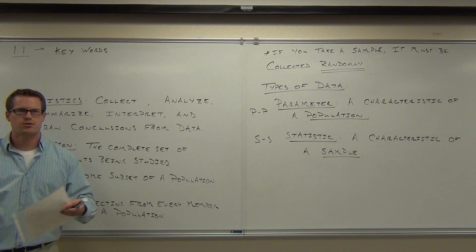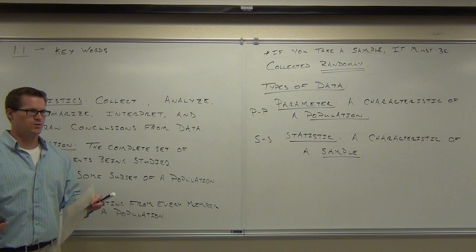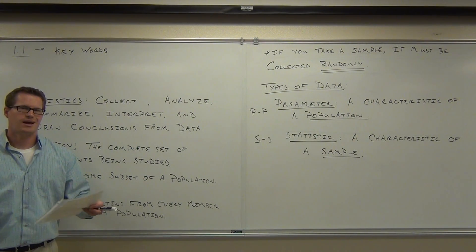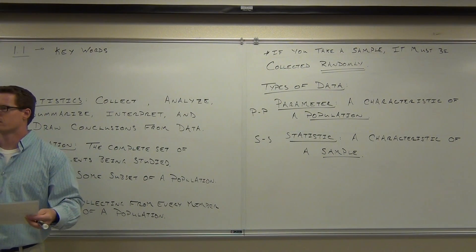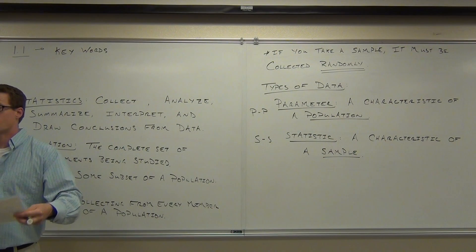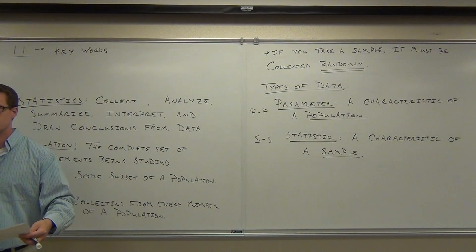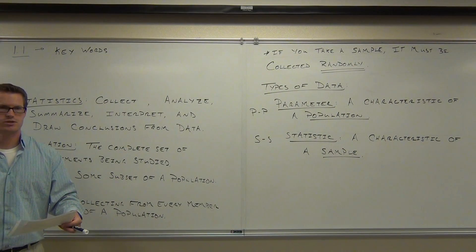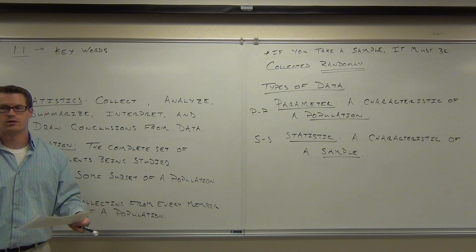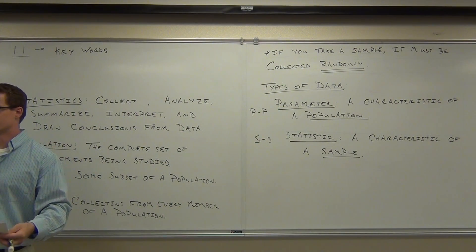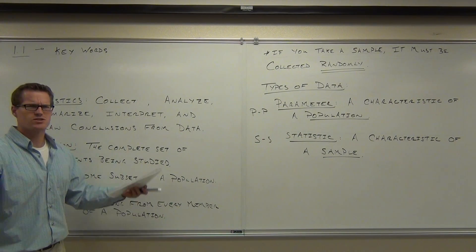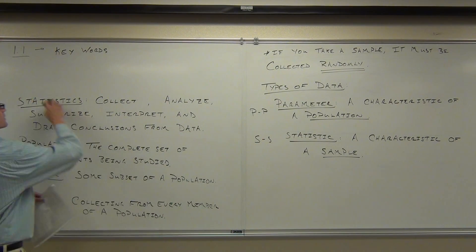Which one do you think doesn't deal with numbers? What's the key word in qualitative? Quality — like the quality of something. It doesn't have to do with numbers. It's just like hair color or eye color. Give me something besides color — what else could it deal with? What do you think of something?